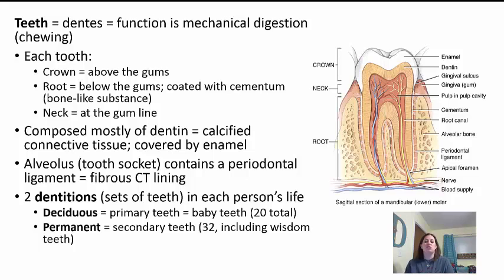You have two dentitions — two sets of teeth in each person's life. The first are called the deciduous teeth, your primary or baby teeth. You have a total of 20 of them. Then you have your permanent teeth — the secondary teeth — and there are 32. This number includes your wisdom teeth, of which you have four. So technically if you remove wisdom teeth, there are 28, meaning you get eight more teeth besides wisdom teeth when going from baby teeth to permanent.